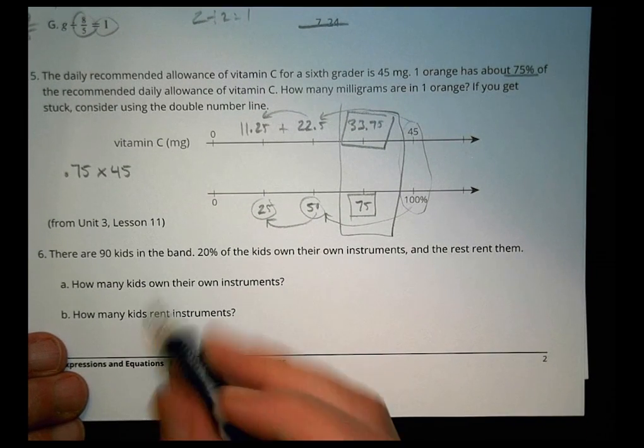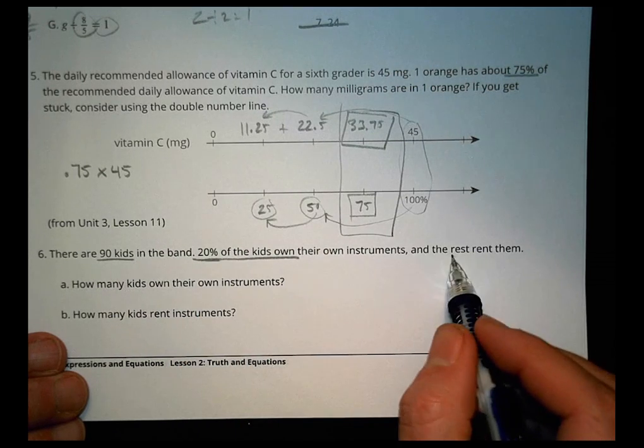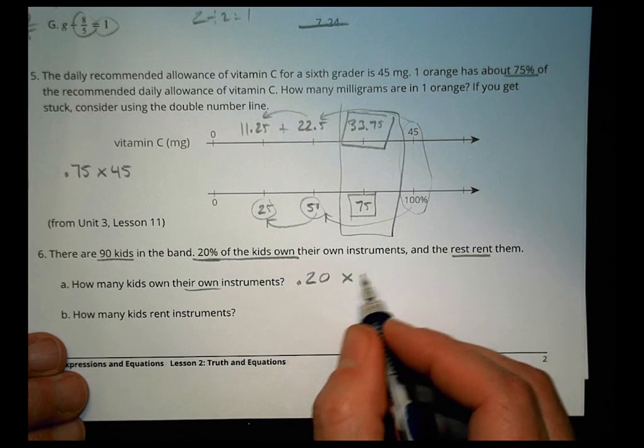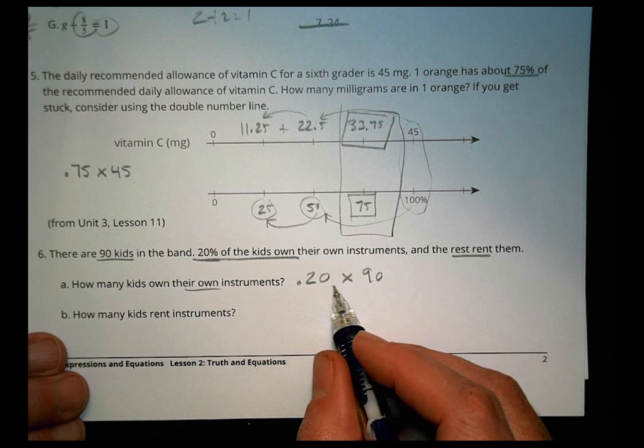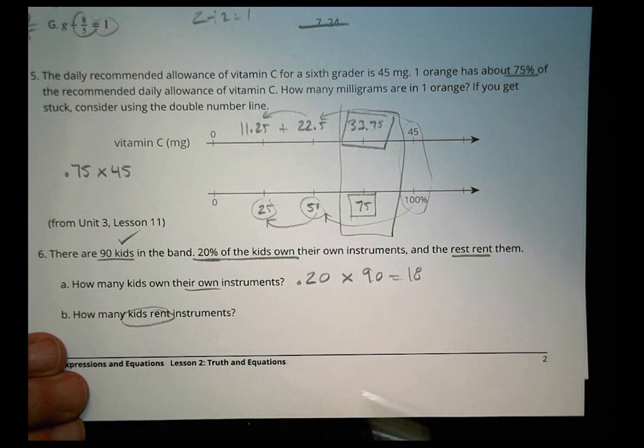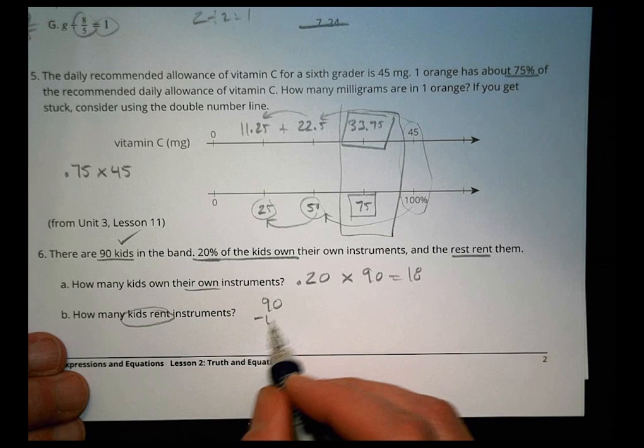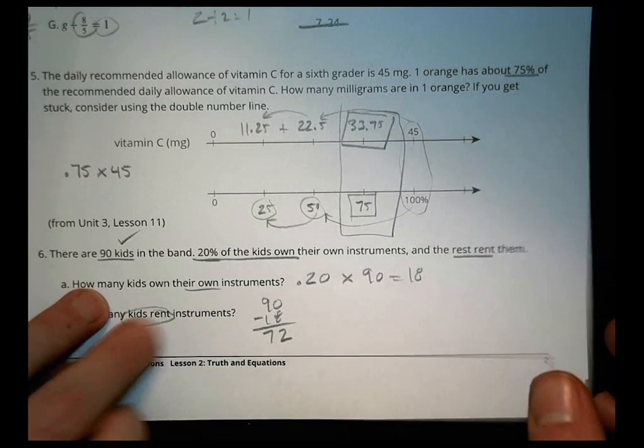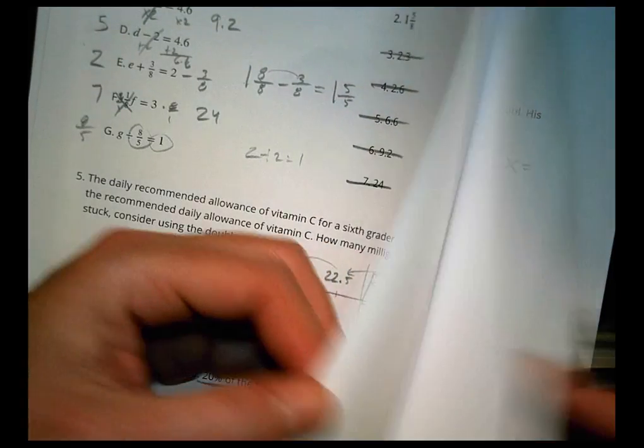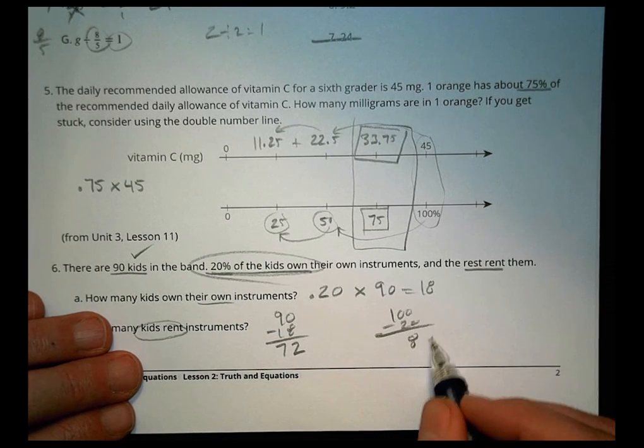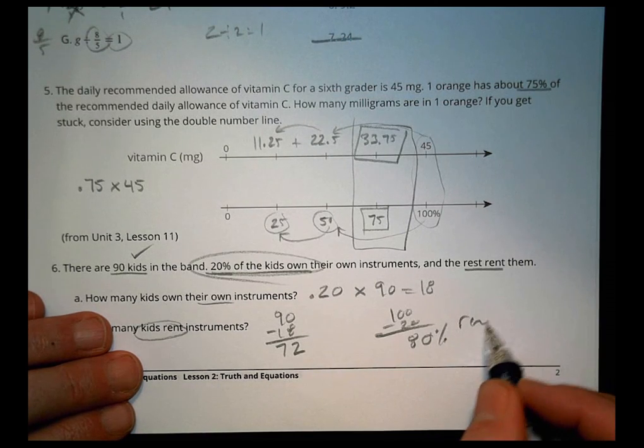Now, last one. There are 90 kids in the band. 20% own their instrument. The rest rent. How many kids own? Well, we're going to do 20% of 90, and 0.20 times 90 equals 18. How many kids rent? Well, a couple ways to do this. There's only 90 kids. So if I subtract the 18 that own them, what I'm left with is 72. That's how many kids are going to rent them. And the final question asked, based upon the same thing, what percentage of kids rent their instruments? Well, if I know that 20% own their instruments, if I do 100 minus 20, it tells me what's left is 80% of the kids rent their instruments.